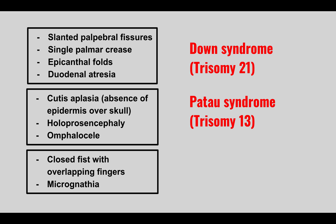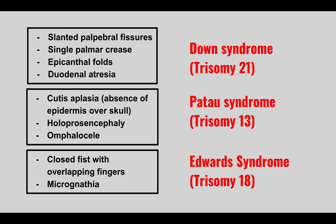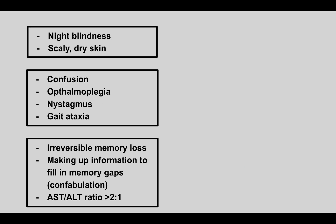The next condition: clenched fists with overlapping fingers and micrognathia (a small jaw). This is Edwards syndrome — trisomy 18. Know these key features to differentiate the trisomies.